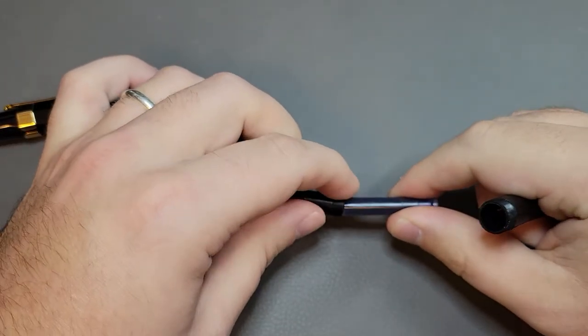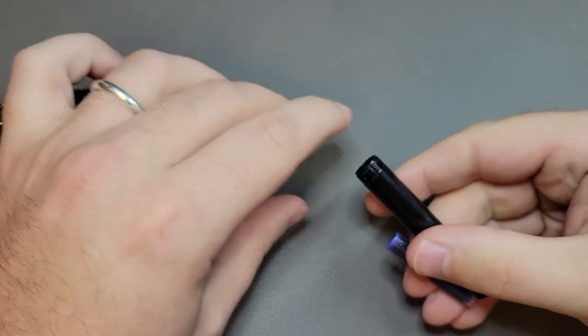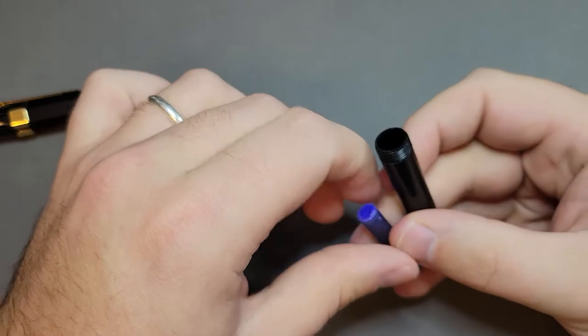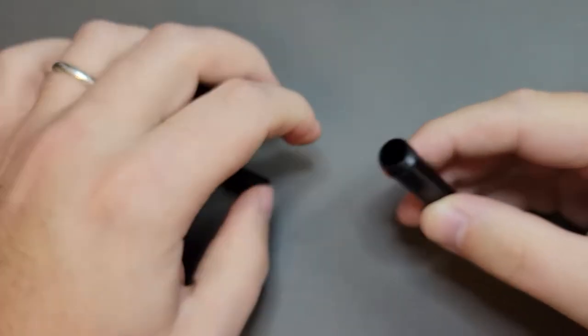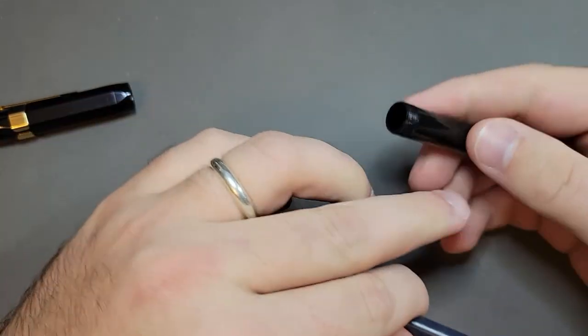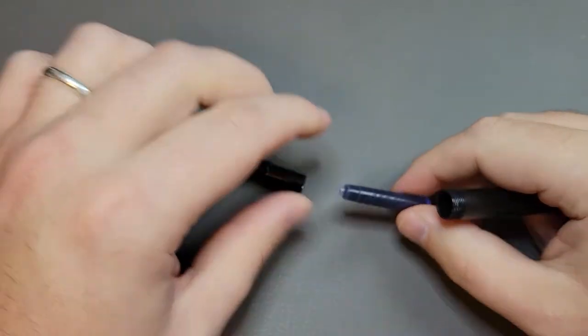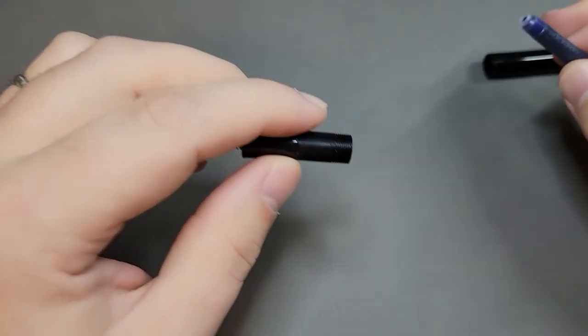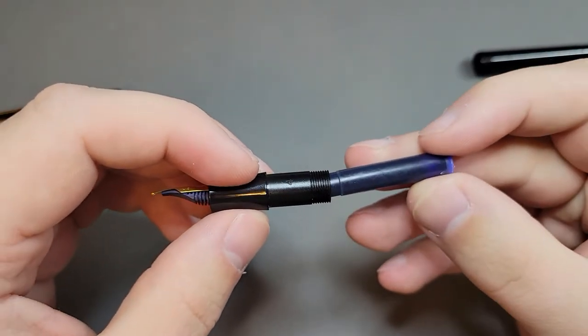One thing people might not know is you'll have the one that's sort of down here, they usually ship it like that, and then they'll put another one and store it in the barrel. Sometimes the cartridges will get stuck in the barrel and they'll say my pen's not closing. It's because they have a cartridge jammed in here in the barrel, but if you just give it a couple taps that usually solves that problem.